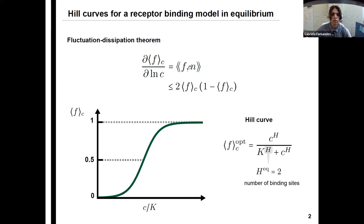And if we further assume that the observable F is bounded between zero and one, which is natural if we're thinking, for example, as the average occupation number normalized by the number of binding sites, this covariance can be bounded by the average of the observable times one minus its average. And we have this proportionality constant in the front, which is equal to two for this case, which is exactly the number of binding sites in the system. So we also can ask ourselves, which curve saturates this inequality at all values of concentration? And this is what is called a Hill curve, which has this functional form over here, where H is known as the Hill coefficient, which in equilibrium is always equal to the number of binding sites.